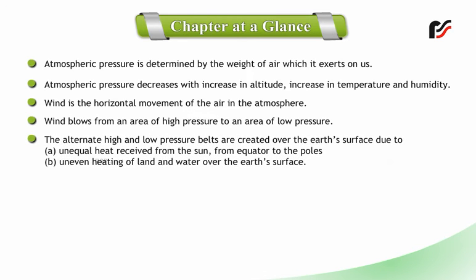The alternate high and low pressure belts are created over the Earth's surface due to: a) unequal heat received from the Sun from the equator to the poles, and b) uneven heating of land and water over the Earth's surface.